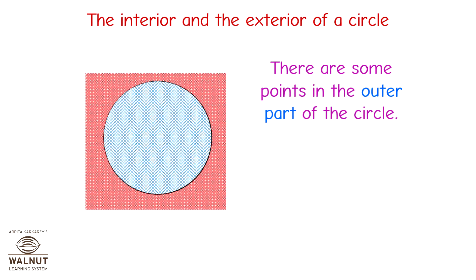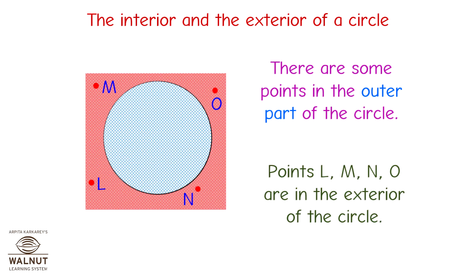There are some points in the outer part of the circle. Points L, M, N, O are in the exterior of the circle.